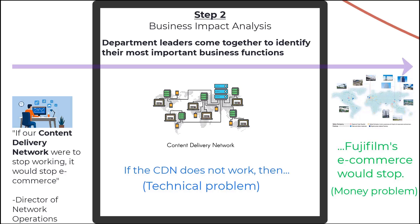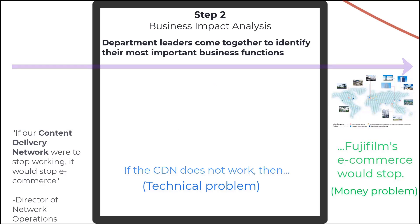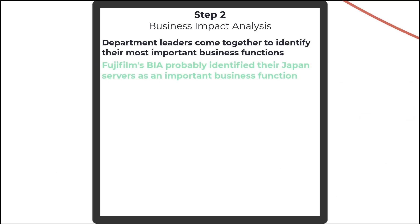For the Business Impact Analysis for Fujifilm, let's first understand what happened with the disaster. Fujifilm discovered an intrusion on their servers in Japan and immediately had to shut down operations elsewhere around the globe. We don't exactly know what that server was for, but let's say it was an important server that held valuable data. Whoever is the data owner of that data would identify in the BIA the importance of that server.